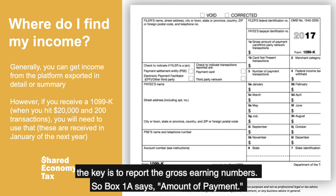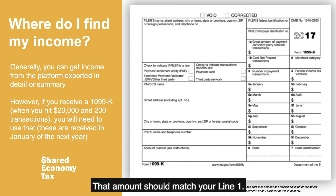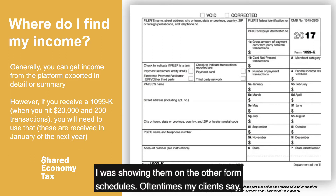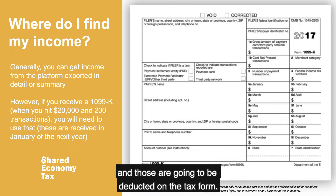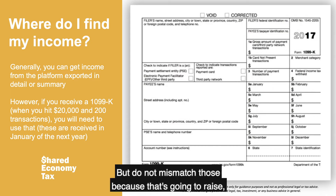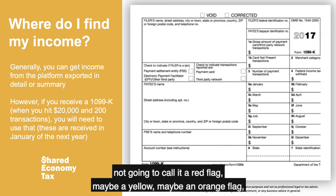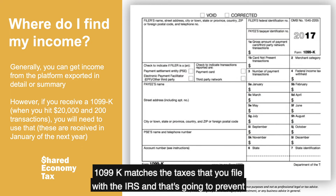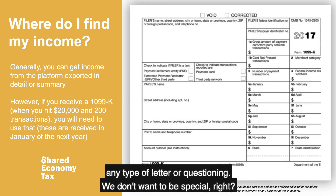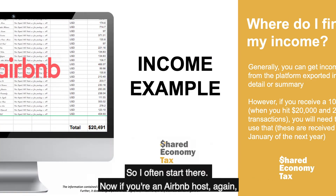When the 1099-K threshold is hit, the key is to report the gross earning numbers. Box 1A says amount of payment — that amount should match your line one on the schedule. Oftentimes clients say they didn't earn all of that amount. I explain that commissions are deducted on the tax form, but you do not want to mismatch those, because that's going to raise a flag. You want what's on the 1099-K filed with the IRS to match the taxes you file with the IRS, and that's going to prevent any letter or questioning.